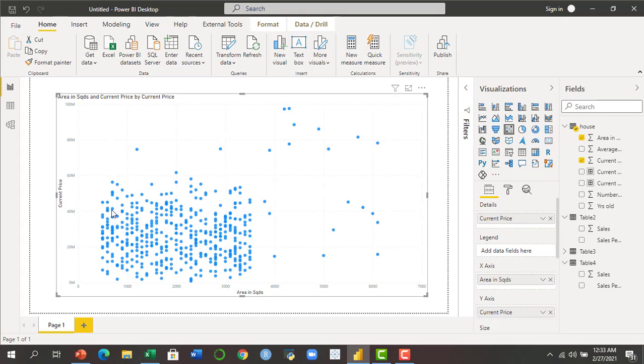Now I want to apply clustering on this scatter chart. For that you need to click on three dots which are on the top right side of this particular visual or object.